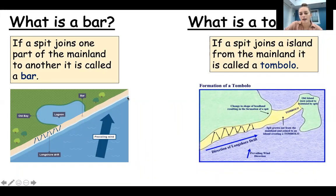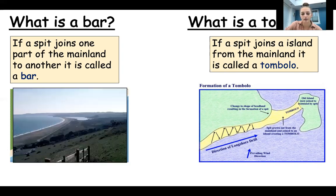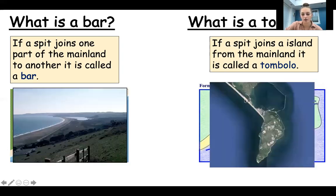A tombolo is when a spit joins an island to the mainland. You can see the direction of longshore drift — the spit would end here, but there's an island close to the mainland that is now joined to the mainland by beach material, and that's called a tombolo. You've got the change in shape of the headland forming a spit, and then this island is joined to the spit, forming the tombolo — the island is now connected to the mainland by beach material.